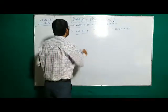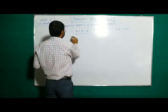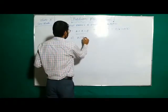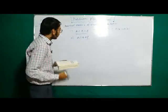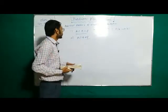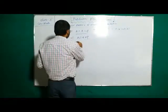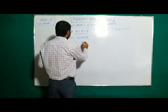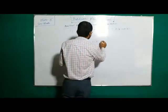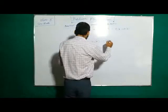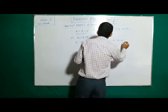But in the case where A intersection B is not equal to phi — that means there are some elements in A intersection B — then the number of elements n of A union B equals n of A plus n of B minus n of A intersection B.